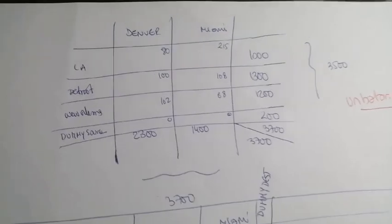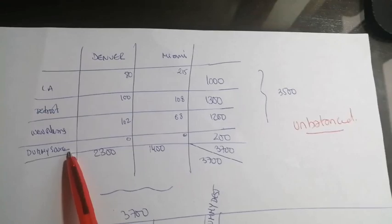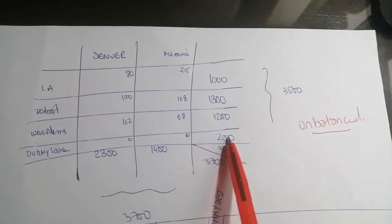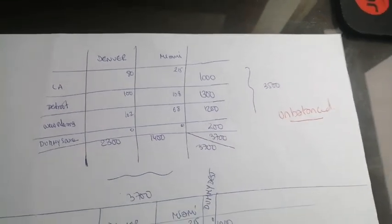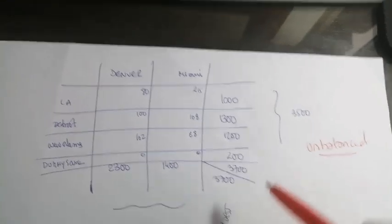The system is unbalanced. Therefore, we predict there is a dummy source with a capacity of 200, as if there is a company producing just to make the system balanced. So if we add those values, we get 3,700.